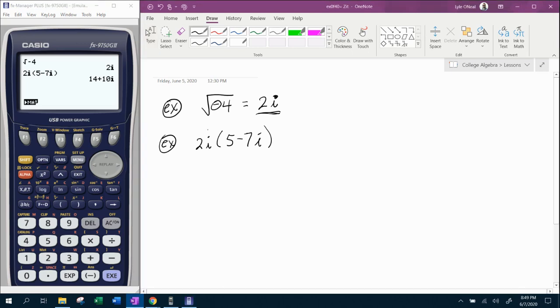And if we did that by hand, just to show you that the calculator is given the right answer, 2I times 5 is 10I. 2 times negative 7 is negative 14. Notice, I times I gives me an I squared. And if you're working with complex numbers, you were probably told that I squared is the same as negative 1. So, what we can do is we can replace I squared with negative 1.